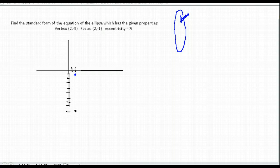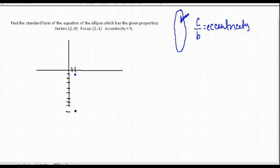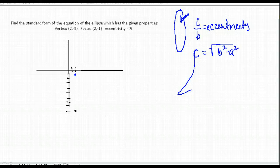So C over B is going to be our eccentricity. We also know that to find A we'll use the equation C² = B² − A².